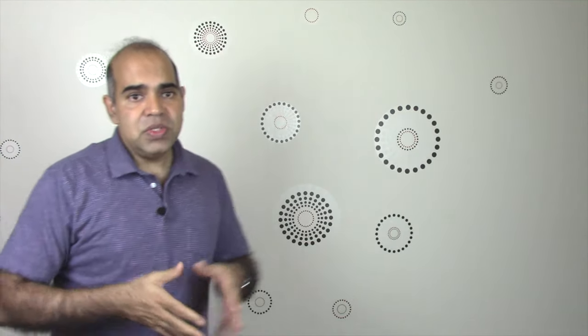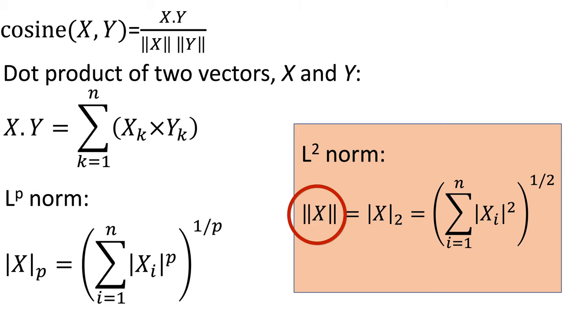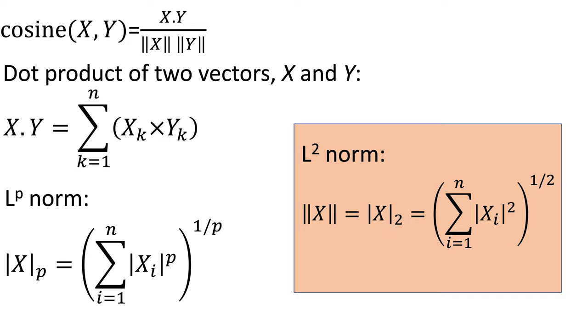For L2 norm, the use of double bars at each side is equivalent to using single bars with a subscript of 2 at the right. To compute cosine similarity, we do not need L1 or L3 norm — we need L2 norm.